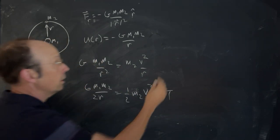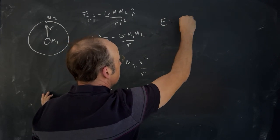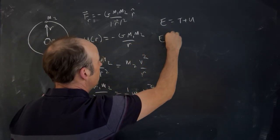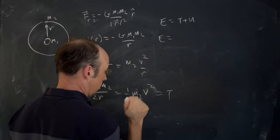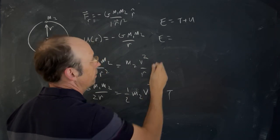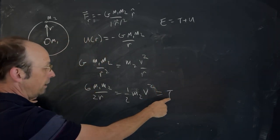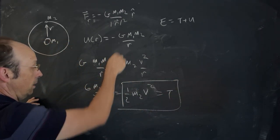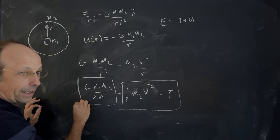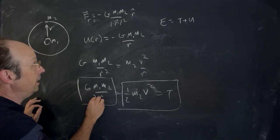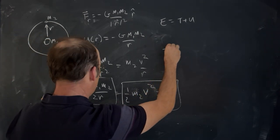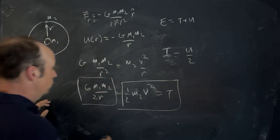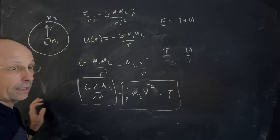What's the total energy? The total energy we can write e as T plus U. There's my kinetic energy term, there's my potential term, but this is also my kinetic energy. And you'll notice this is one half of that. So I get T equals U over two. If I take the potential, divide by two, I get the kinetic energy.